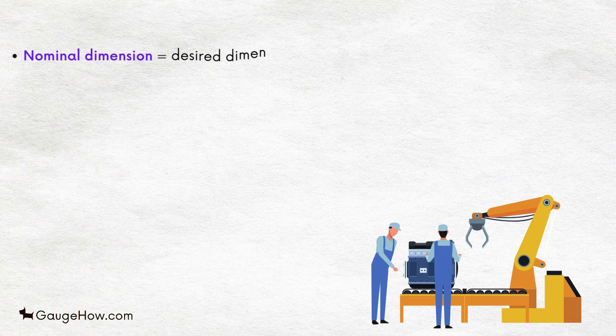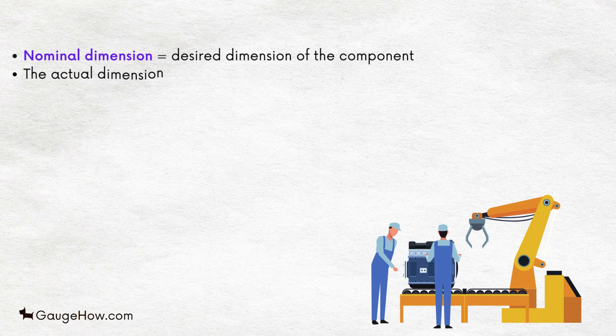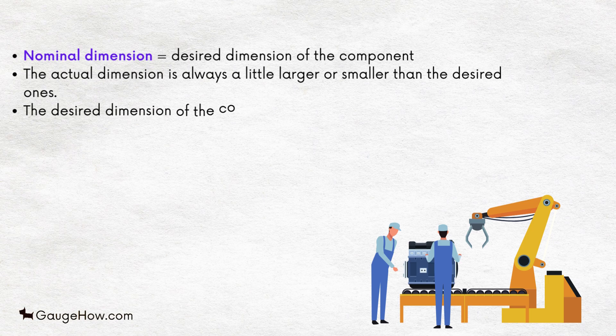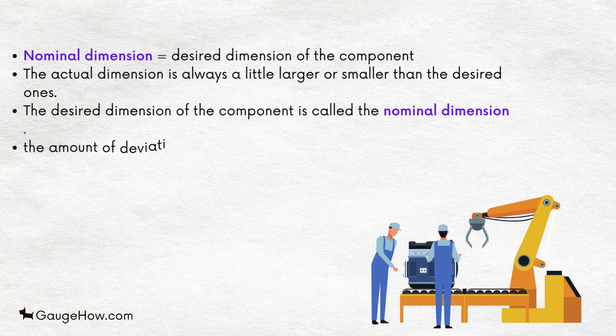The desired dimension of the component is called the nominal dimension and the amount of deviation of the actual dimension from the nominal dimension is called the tolerance. The extreme permissible dimensions of a part are called limits.